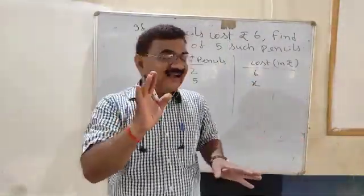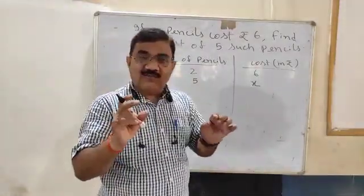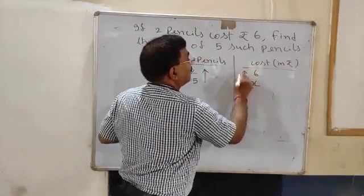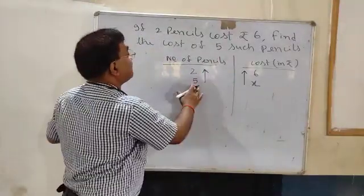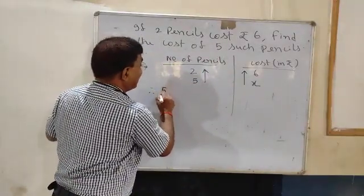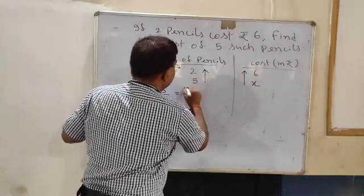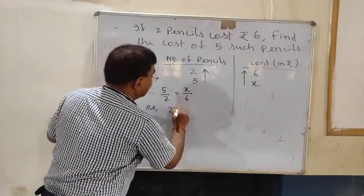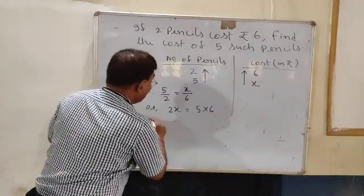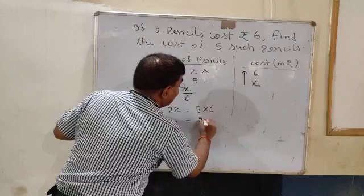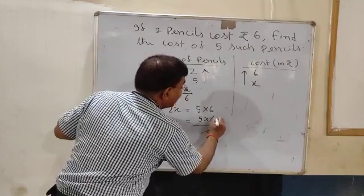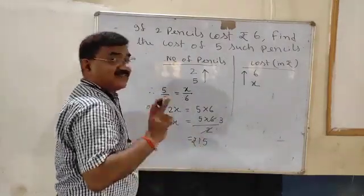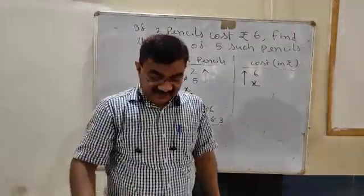It is direct variation. In direct variation, put the arrow so that both arrow mouths point in the same direction. Write according to this: 5 by 2 is equal to x by 6. Cross multiplication gives 2x is equal to 5 into 6, or x is equal to 5 into 6 by 2. Two threes are 6 and five threes are 15. So the cost is rupees 15. It is a question of direct variation.